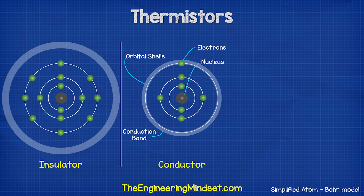With an insulator, the outermost valence shell is packed. There's very little to no room for an electron to join. The nucleus has a tight grip on the electrons and the conduction band is far away, so the electrons can't reach it and escape. Therefore, electricity can't flow through this material.